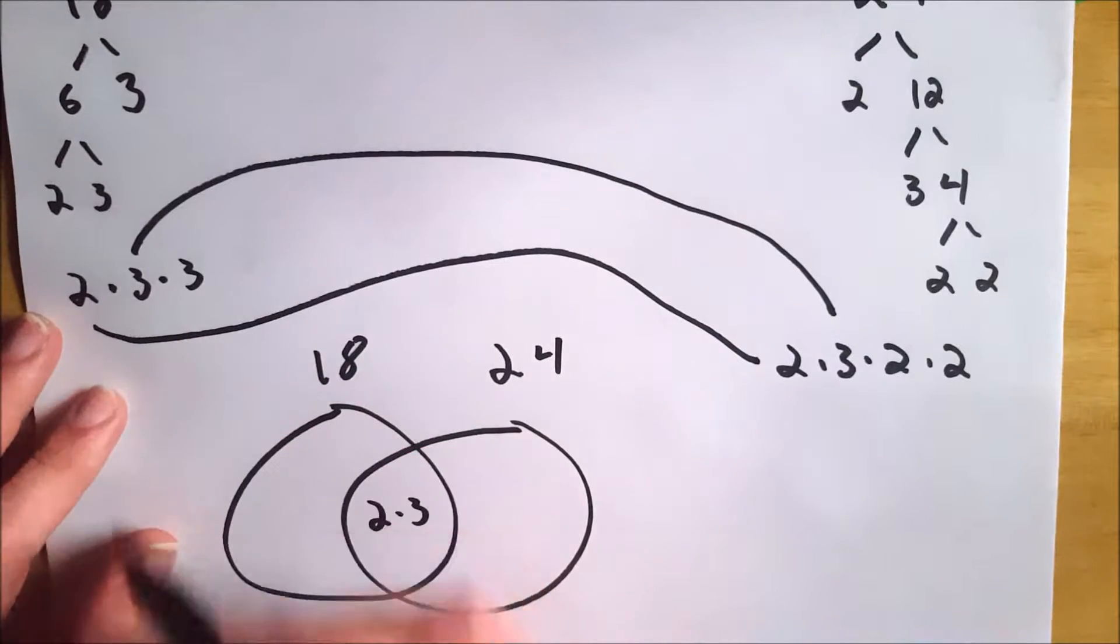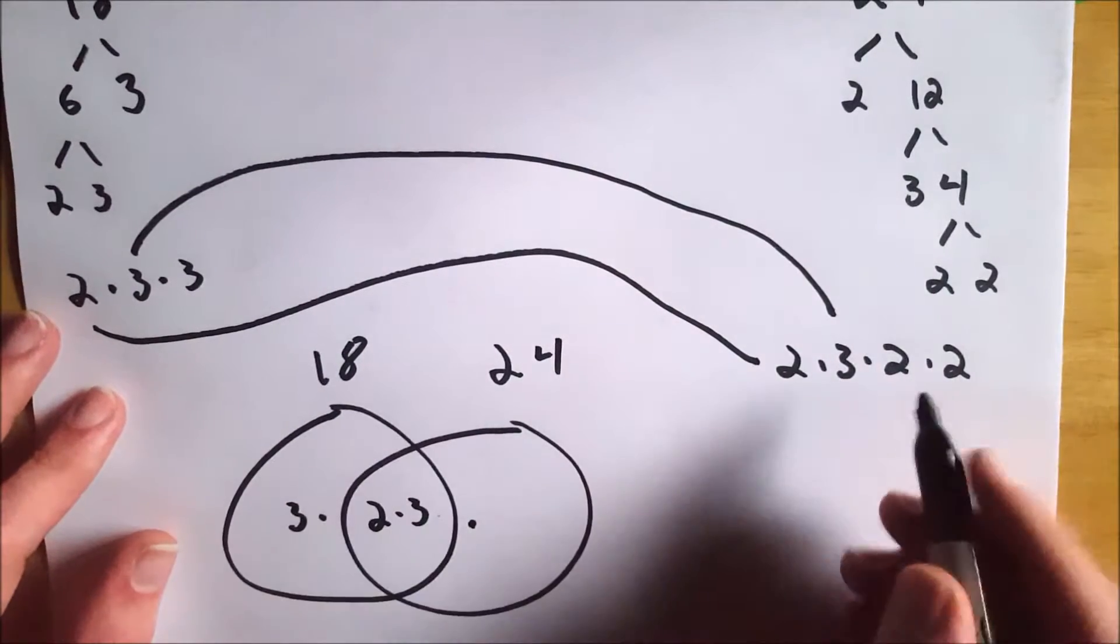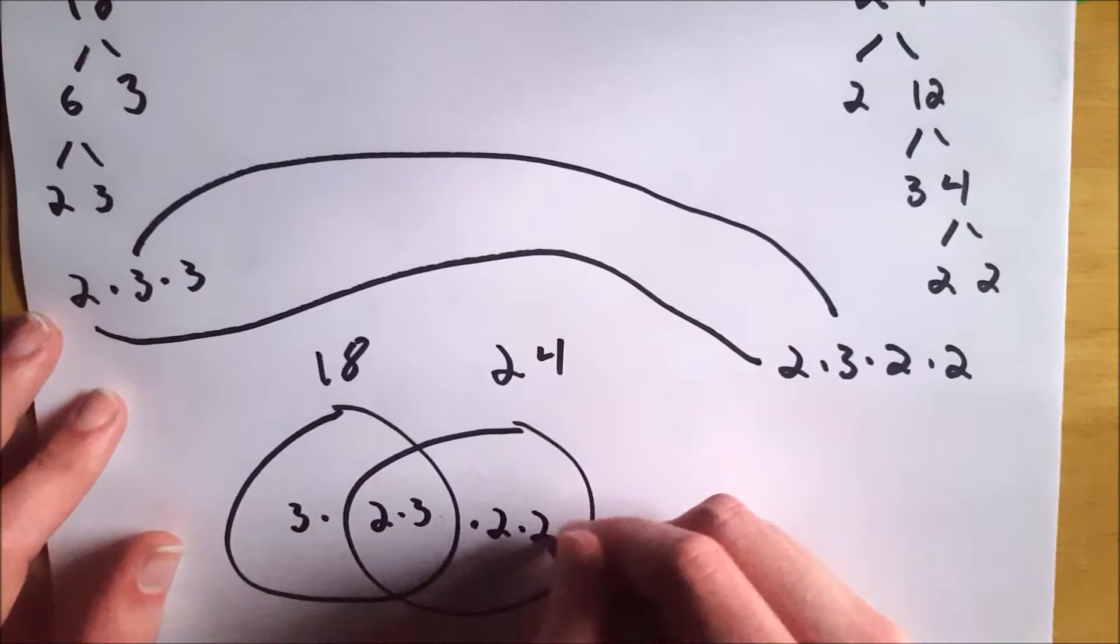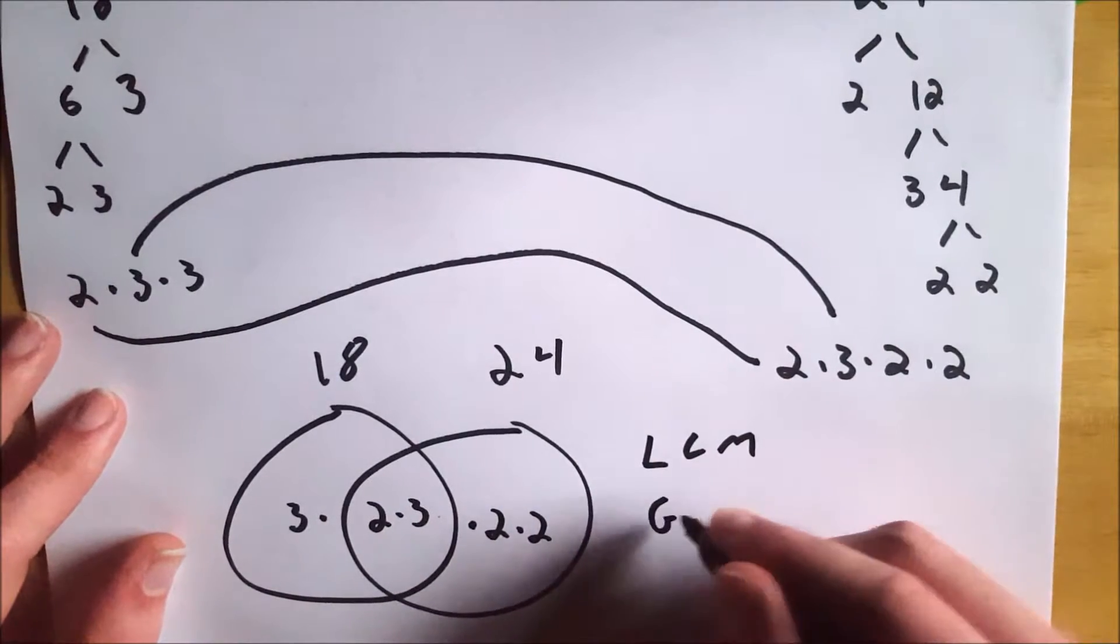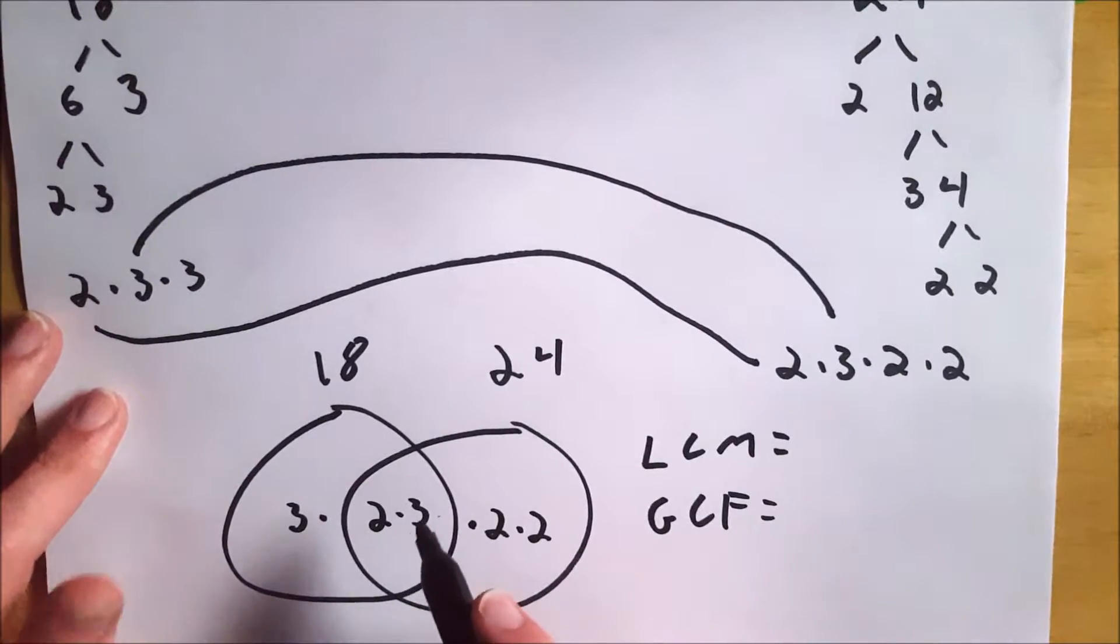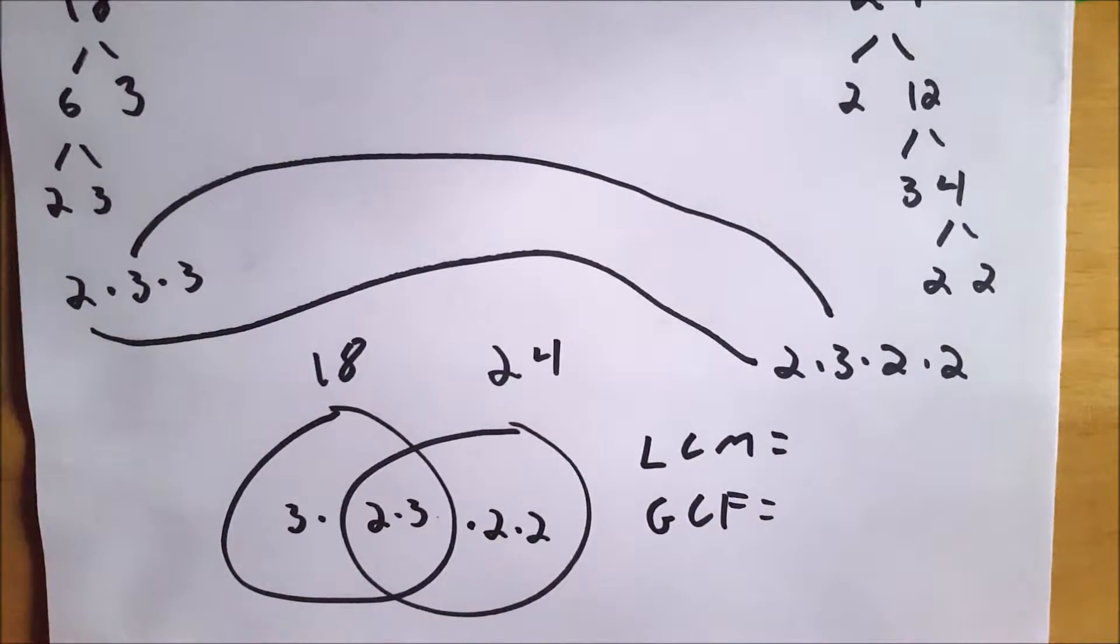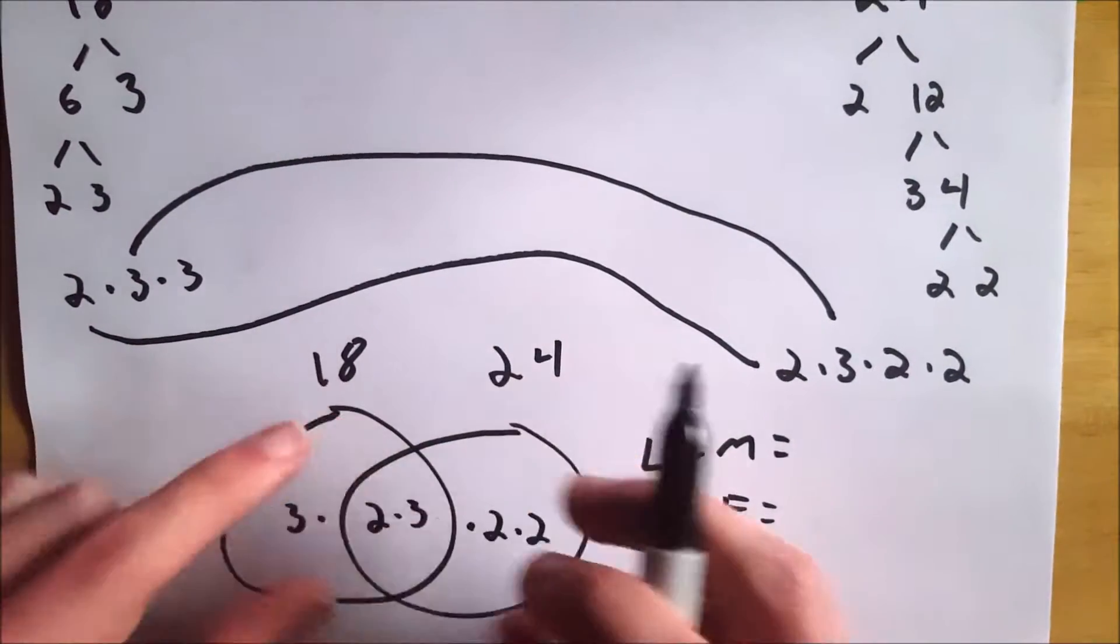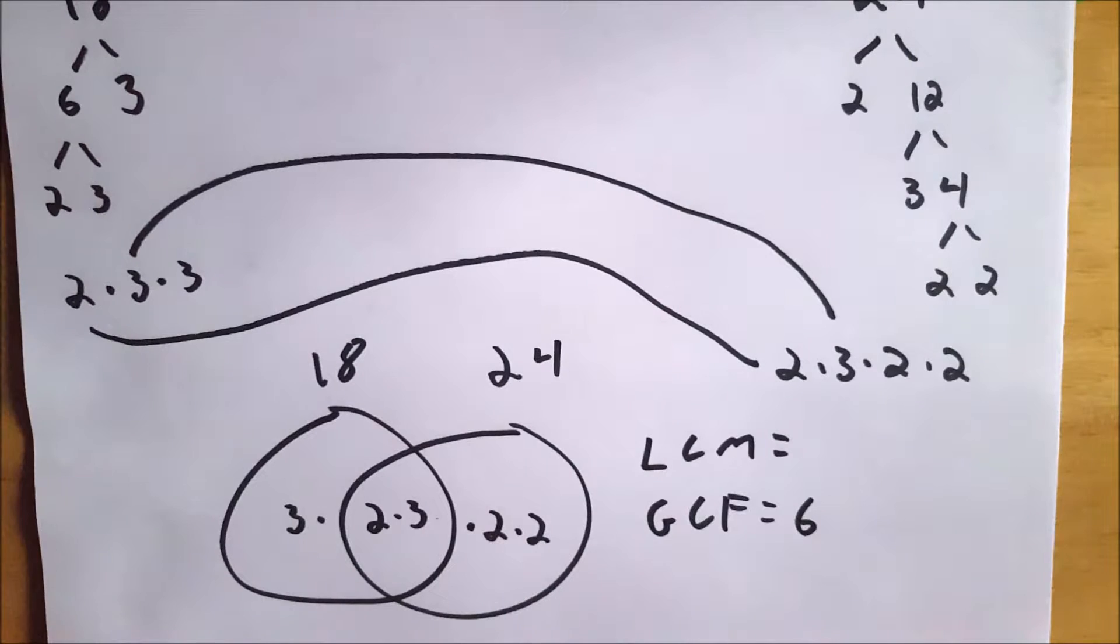And then you'll put the excess from each number in their respective circles. So from 18, we still have a 3 left over, so that goes in the 18. You can see I'm putting multiplication symbols in here as well. And then for 24, we've got a pair of 2s left over, so that goes in the 24 circle. And now you're practically done, super easy now, to find the least common multiple and the greatest common factor. To find the greatest common factor, all you have to do is multiply the two numbers that are shared between here. So for any numbers that you're doing, all you have to do is multiply the intersection of these two circles. So in this case, it's 2 and 3. 2 times 3 is 6, and 6 is indeed the greatest common factor of 18 and 24.